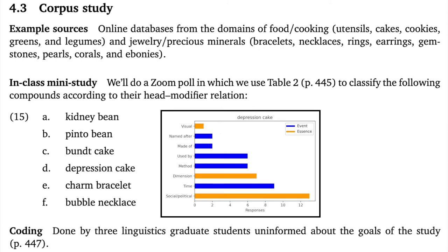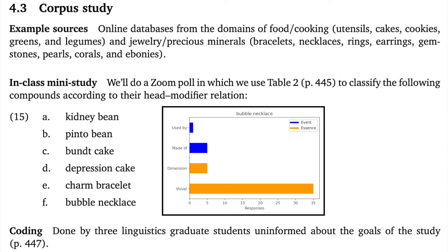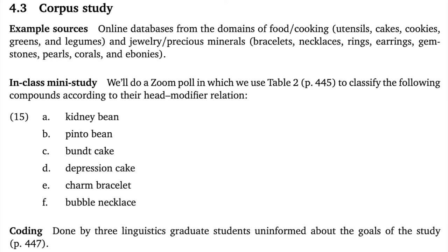Depression cake seems to have a lot of uncertainty. The dominant response is social-political, which is an essence-related category, even though depression cakes are artifacts. Bubble necklace is also somewhat unexpected from the point of view of the hypothesis — the dominant response is visual, which I believe is correct, but that's an essence-related category. Obviously, for this little study I favored hard cases. When we stick to things like pinto beans and birthday cakes, we see almost total systematicity. I chose this sample to give you a sense for the range of issues that annotators likely faced when doing their work.